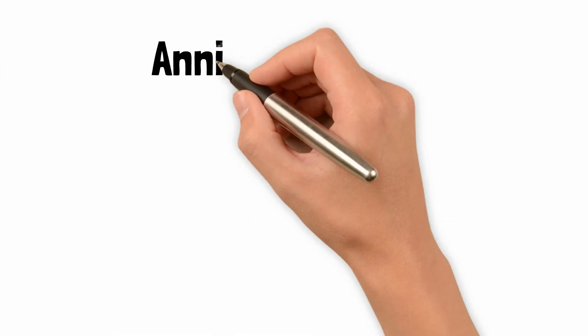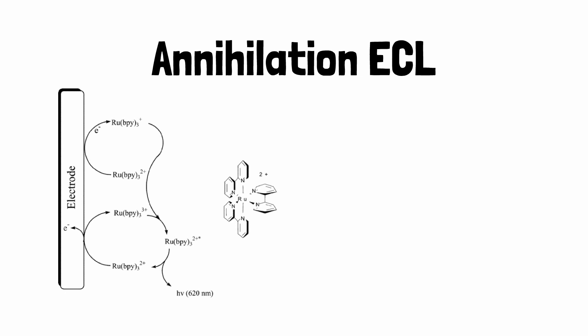About annihilation ECL. The first detailed studies on ECL involved electron transfer reactions between an oxidized and a reduced species, both of which were generated at an electrode by alternate pulsing of the electrode potential. This approach is typically called annihilation.